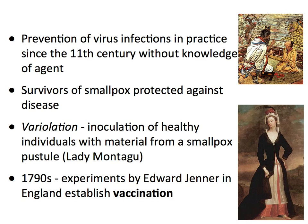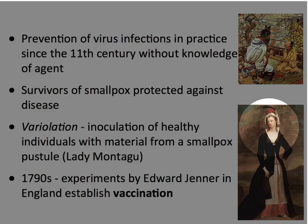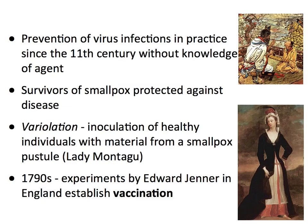The problem is variolation kills 30 percent of the people who get it, so that's not a really good safety profile for a vaccine. Lady Montague, who was the wife of the British ambassador to Turkey, heard about this in Turkey and brought it back to the UK, and it spread pretty widely.